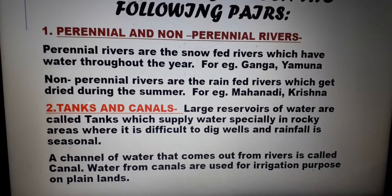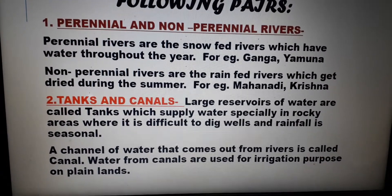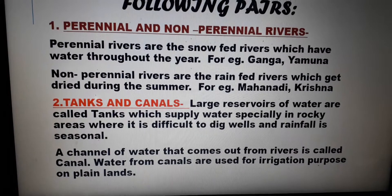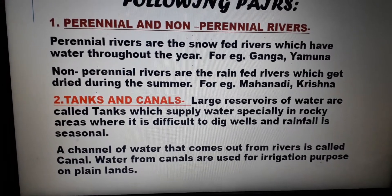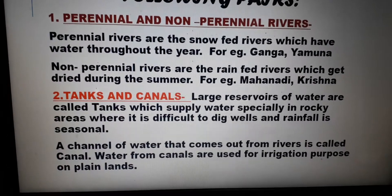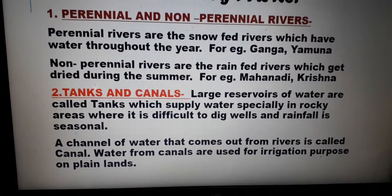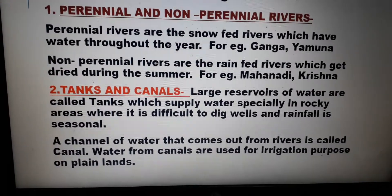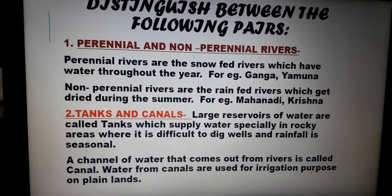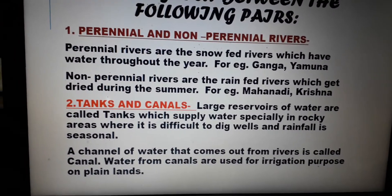Tanks and canals: large reservoirs of water are called tanks, which supply water specially in rocky areas where it is difficult to dig wells and rainfall is seasonal. A channel of water that comes out from rivers is called a canal. Water from canals is used for irrigation purposes on plain lands.